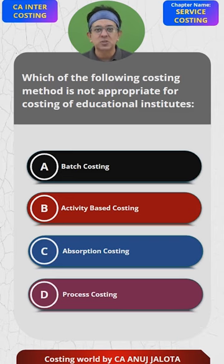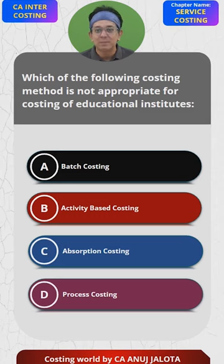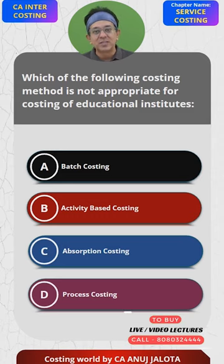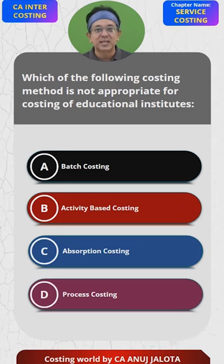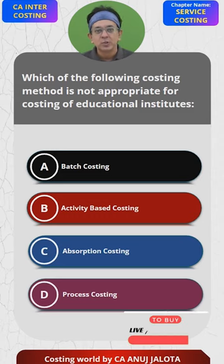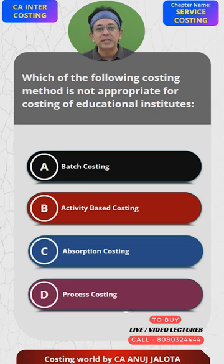But D — Process Costing — no. Process Costing is a concept that is only applicable to the manufacturing sector, whereby goods pass from one stage to another, and the output of one process becomes the input for the next process. In the case of an educational institute, there is no such output. So out of the four answers, it should be D — that's the correct answer.